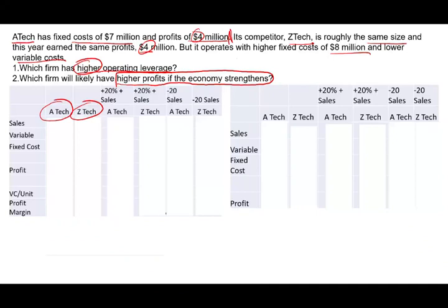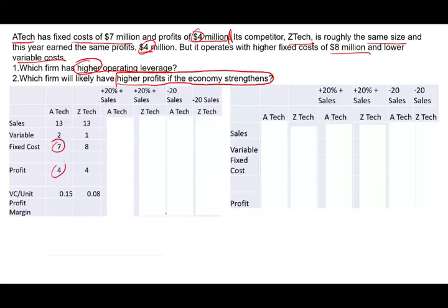I'm going to make up some numbers for A-TAC and Z-TAC, assuming sales is $13 million for both. For A-TAC: $13 million in sales, minus $2 million variable cost, minus $7 million fixed cost, equals a profit of $4 million. For Z-TAC: same $13 million in sales, minus $1 million variable cost, minus $8 million fixed cost, also equals $4 million profit. So both companies have the same profit but different variable and fixed cost structures.